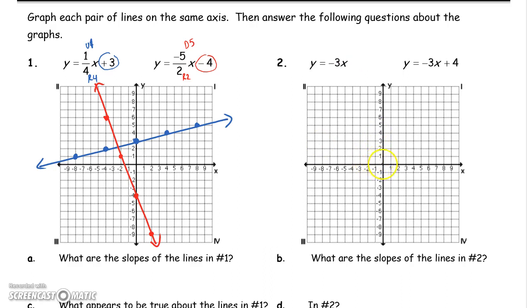So go ahead and plot 0, 0. And then also remember, if my slope is negative 3, that's the same as negative 3 over 1, or 3 over negative 1. So that's down 3, right 1, or up 3, left 1. Get my straight edge out. Graph my line.